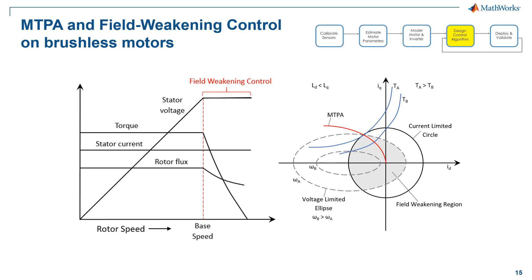Let's quickly flashback on what field weakening control on brushless motors means and what the motivation is for doing it. Typically in FOC, we run the motor within the limit of base speed, but for some applications we like to run the motor beyond the base speed, where the back-EMF will increase and is more than the supply voltage. The idea of field weakening control is to help us achieve higher speed without hitting the DC bus voltage limit.